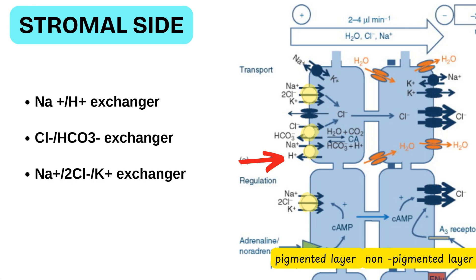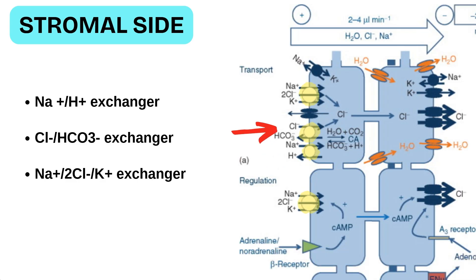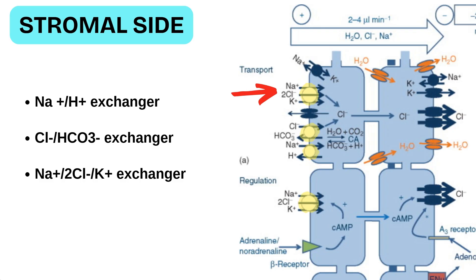Then we have the chloride-bicarbonate exchanger, which brings chloride into the epithelium while exchanging it with bicarbonate. Then we have the sodium-potassium-2-chloride co-transporter, which allows sodium, potassium, and 2 chloride molecules into the pigmented epithelial cells. These transporters are regulated by cyclic AMP, meaning the sympathetic system plays a role in the exchange of these molecules.